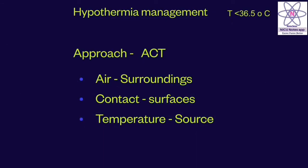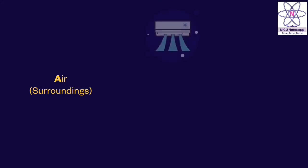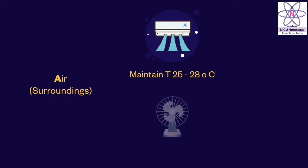How do you manage hypothermia is the approach ACT. That's air surroundings - you maintain the surrounding temperature between 25 to 28 degrees centigrade and switch off the fans or ACs or close the windows.